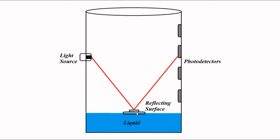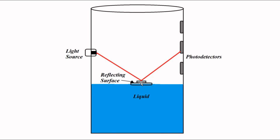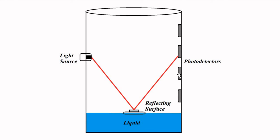The floating object has a reflecting surface — a mirror — placed on it. Light is focused on that surface, and based on the laws of reflection, the incident light gets reflected at the same angle toward the array of photo detectors. Depending on the liquid level, the reflected light is focused on one of the series of photo detectors. By determining which photo detector receives the reflected light, we can determine the level of liquid in the tank. This is a very simple technique for determining liquid level.